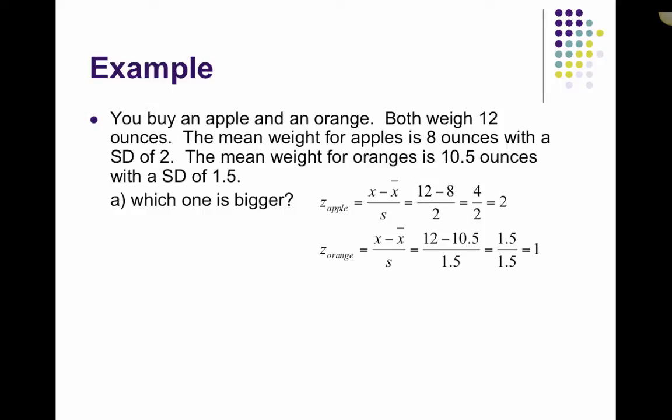Then we calculated the z-score for the orange, again using the same equation, your data value minus the mean over the standard deviation. This gives us our observed weight of 12 minus the mean of 10.5 divided by the standard deviation of 1.5, which gives us a z-score of 1. Now, in this case, the orange is only one standard deviation above the mean.